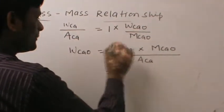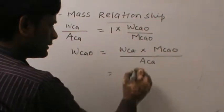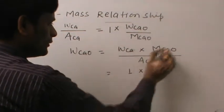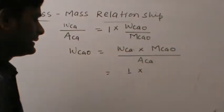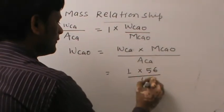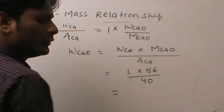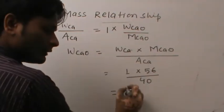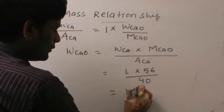Now, put the value. Mass of Ca is 1 into molecular mass of CaO equals to 56 divided by 40. And the value will be 1.4 gram.